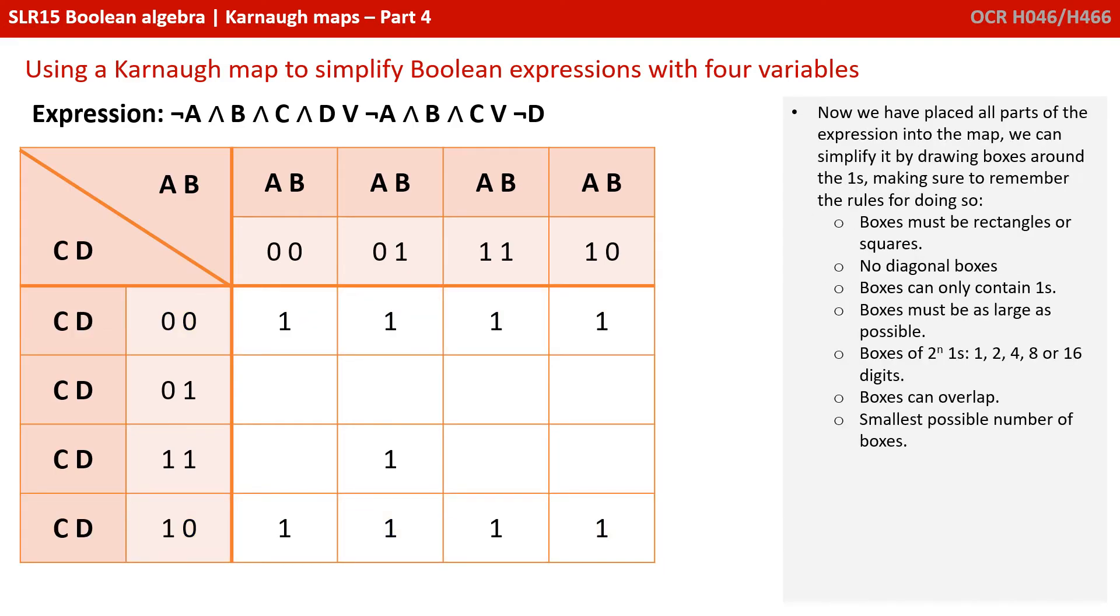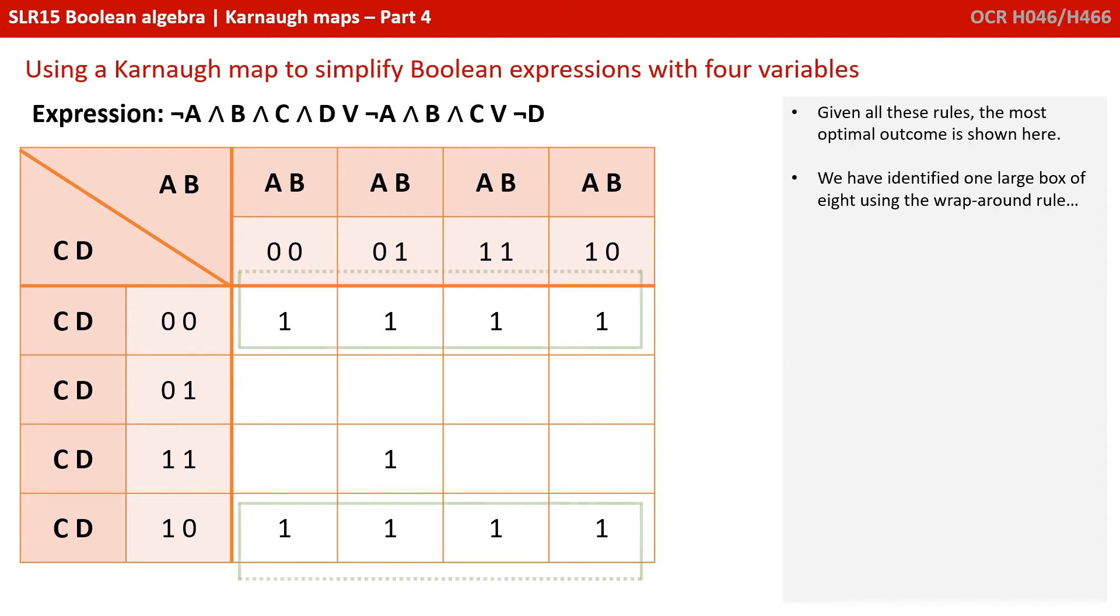Now we've placed all the parts of the expression into the map, we use our set of rules to draw our boxes. Given all these rules, the most optimal outcome is shown here. We've identified one large box of 8 using the wraparound rule, and a second box of 2. These boxes will now allow us to simplify the original expression.